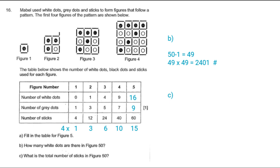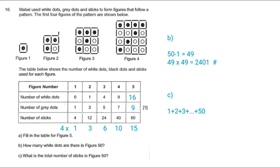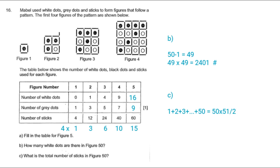This sequence 1, 3, 6, 10, 15 is nothing but a triangular number sequence: 1, then 1 plus 2 gives us 3, 1 plus 2 plus 3 gives us 6, 1 plus 2 plus 3 plus 4 gives us 10, and so on. If you need to learn more about triangular numbers and pattern problems, please click on the link in the top right corner. For figure 50, we need to add 1 plus 2 plus 3 and so on until 50, which is given by the formula n(n+1)/2, which is 50 times 51 divided by 2, equal to 1,275.